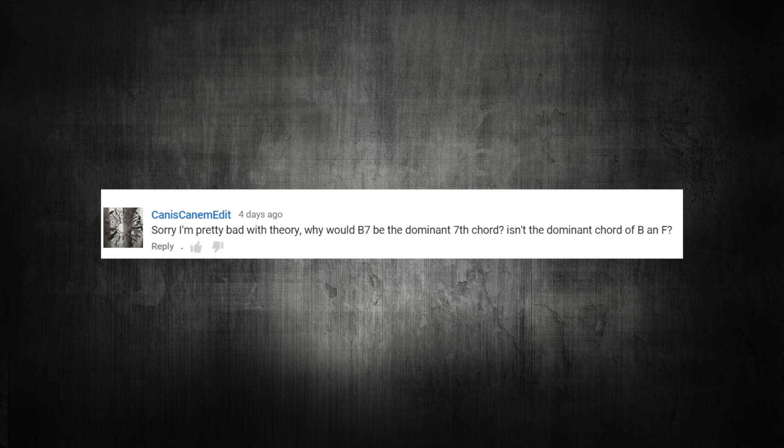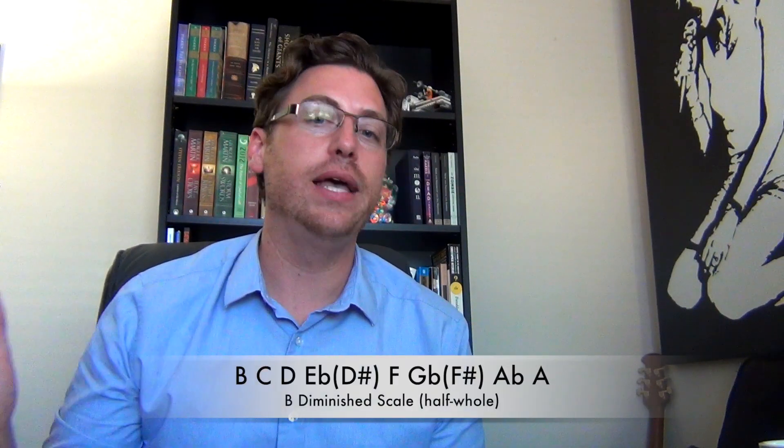Next question: why would B7 be the dominant seventh chord — isn't the dominant chord of B an F? This question pertains to a lesson I did on riff writing with the diminished scale. To get to the answer quickly: if you were in the key of B major, your dominant would be F sharp; if you were in the key of B flat, it would be F. But in this particular lesson, since it's focused around the diminished scale, we're not in B major. The diminished scale is not part of the modes from the major scale — this is a B diminished scale, which starts on B and has a series of half steps and whole steps.